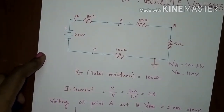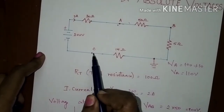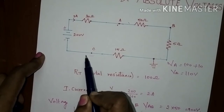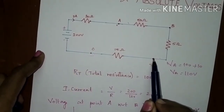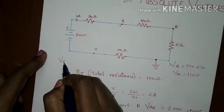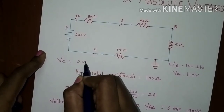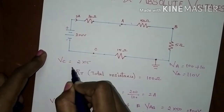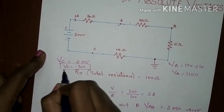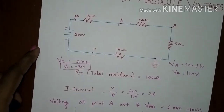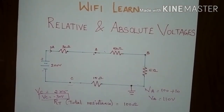If voltage is negative with respect to earth, then it must be indicated as negative. For example, the absolute voltage across point C: it is connected to the negative terminal with respect to the earthing point. So VC absolute voltage can be found by current flowing through the circuit, 2 into 15, and since it is connected to the negative terminal, VC absolute value is equal to minus 30 volts. This is the absolute voltage value, and the relative voltage is found between the two terminals being represented.